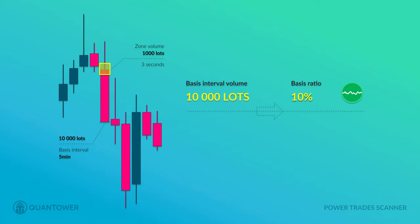But what if the five-minute volume was only 1,100 lots — for example, a zone found during midnight hours with less trading activity? In that case, the basis ratio would be 1,000 divided by 1,100, times 100, which equals approximately 91%. That means trading is not intensive now, and the influence of the zone can be very significant. The same volume of 1,000 lots in different situations can be both significant and insignificant, affecting the DOM differently. This is a very important parameter because it answers whether a zone is truly influential.